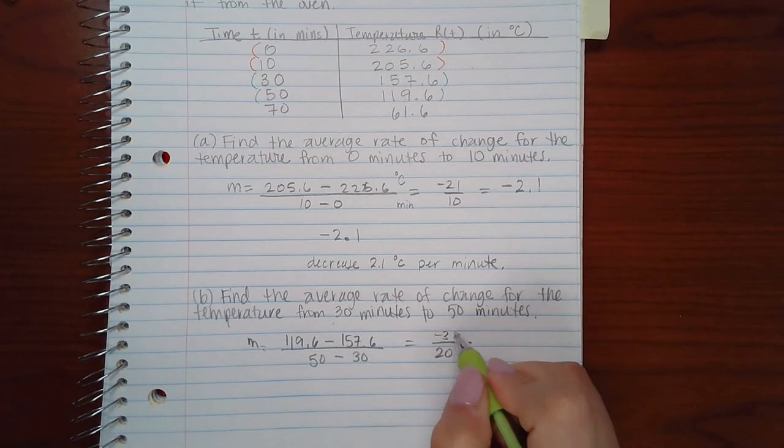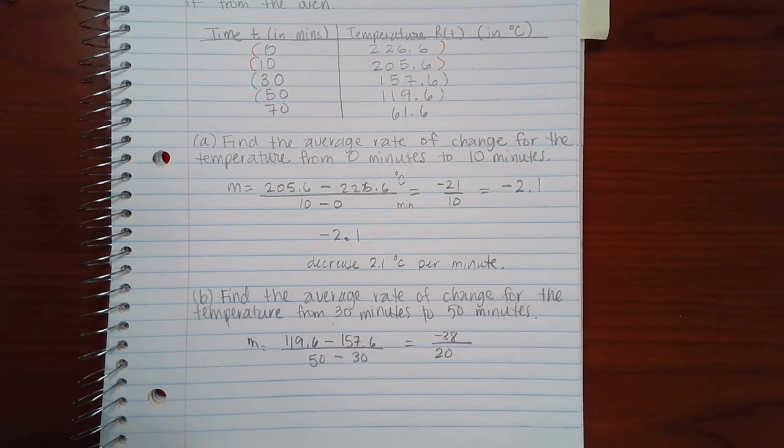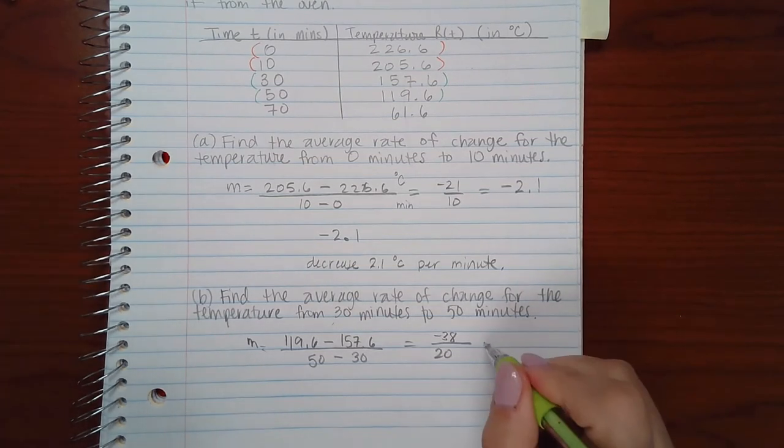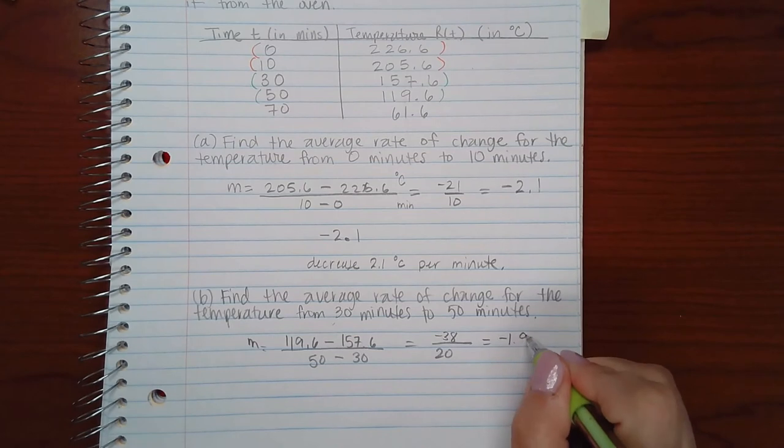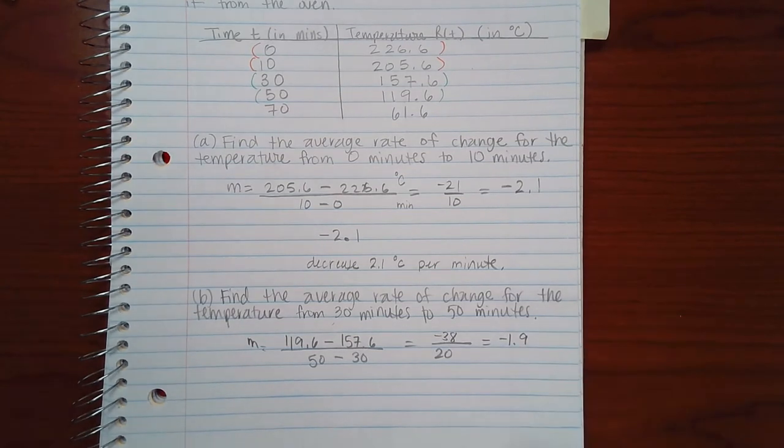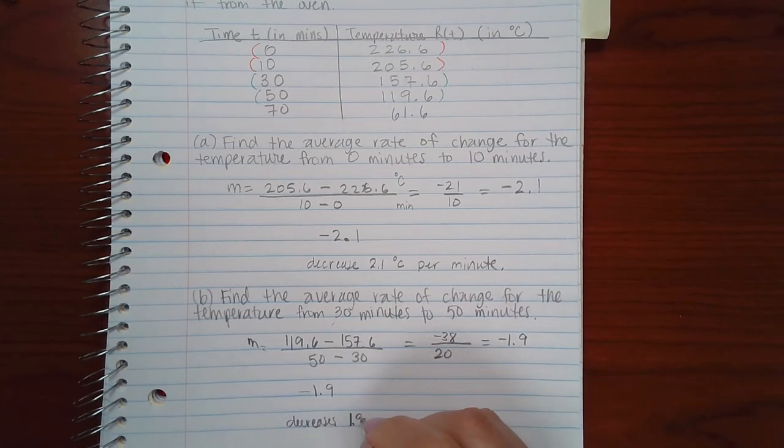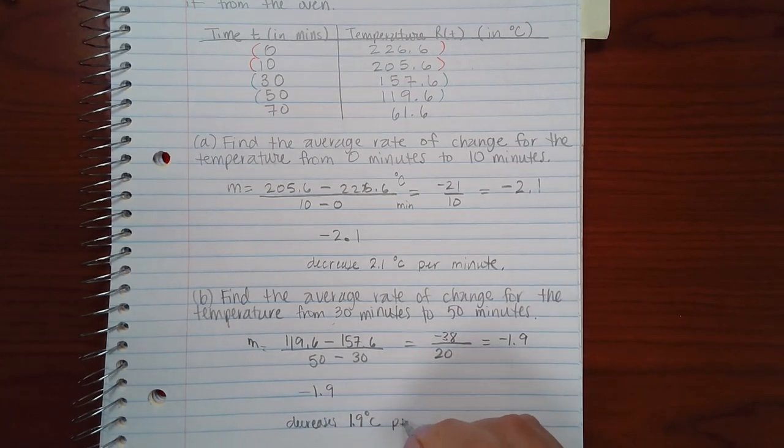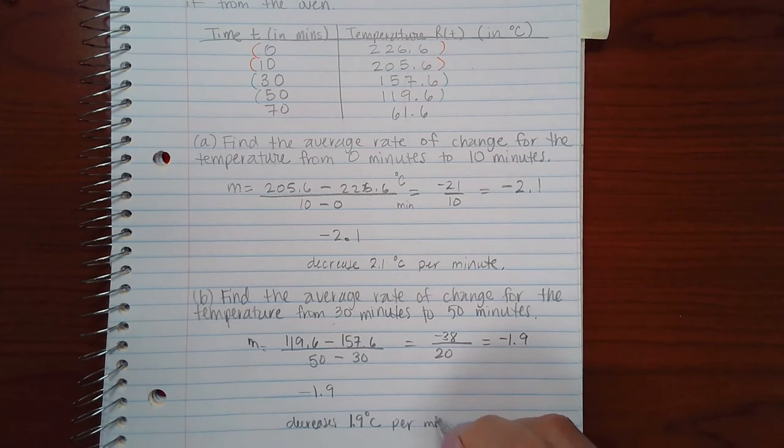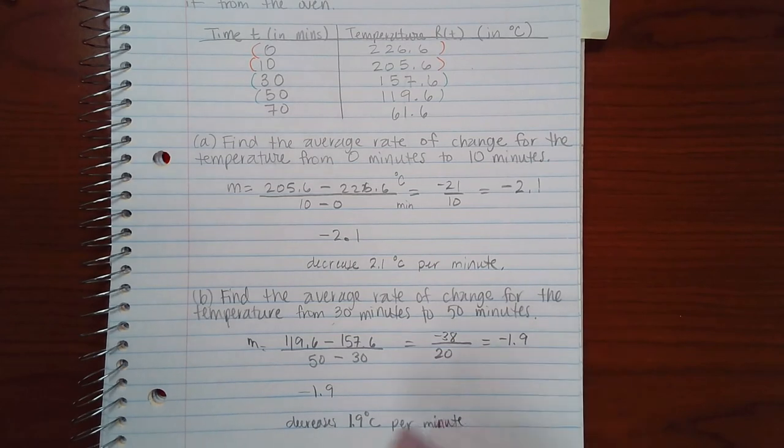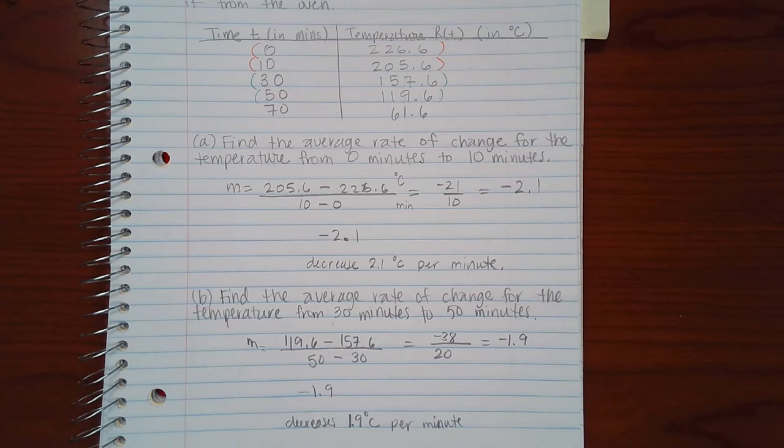So I end up with negative 1.9 as my numerical answer. But again, what does that mean? It means that the rate decreases 1.9 degrees Celsius per minute. If my numbers happen to be positive, then it wouldn't be decreasing, it would be increasing at that rate.